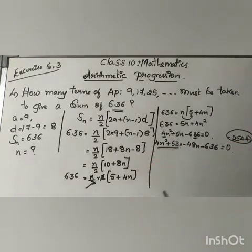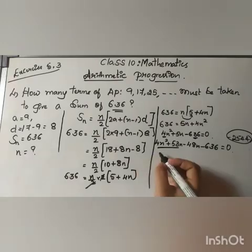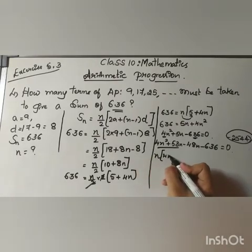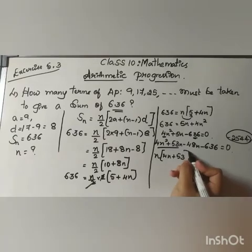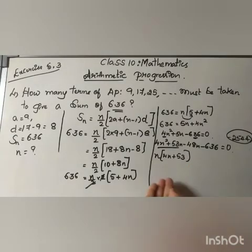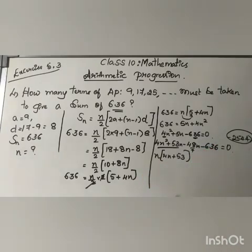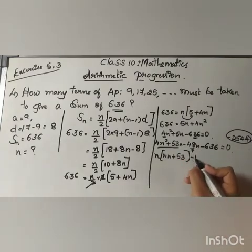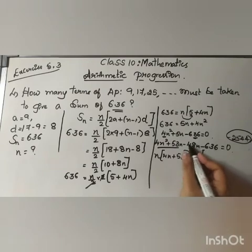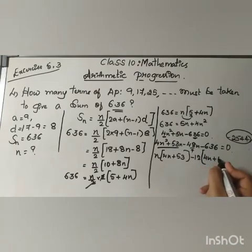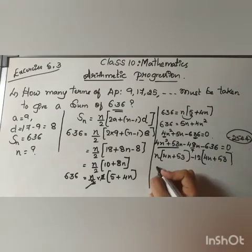If I see the first two terms, I can only take n as common. n into (4n plus 53). The second factor also I have to get 4n. If I want to get 4n, just let me divide by 4. If I divide, I'll get 12 as the answer. 48 by 4 means 12. If I take minus 12 common, it will remain 4n plus 53. So factors are (n minus 12) and (4n plus 53).